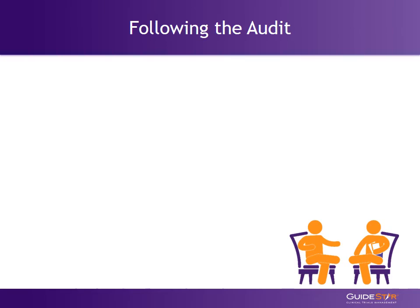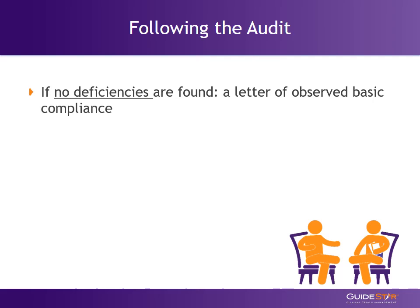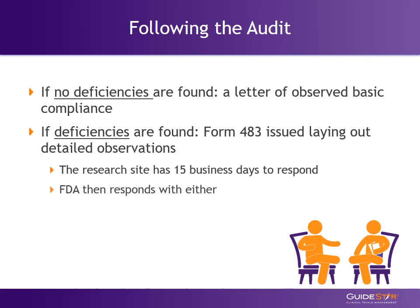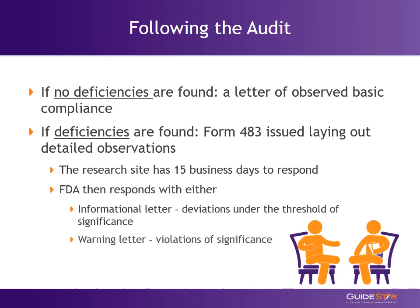Once an audit is complete, the inspectors typically hold an exit interview that provides the site with a highlight of audit findings and outcomes. If everything is in order and no deficiencies are found, a letter of observed basic compliance will be issued. If deficiencies are found, the inspector will issue a 483 containing detailed inspectional observations. This pre-warning notification allows the site 15 business days to respond to the deficiencies. Following that response, the FDA will provide an informational letter for deviations under the threshold of significance. If there are significant violations, a warning letter will be issued to the site.